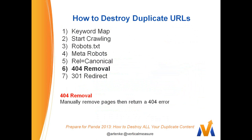Another perfectly legitimate way to get rid of duplicate content is through 404 removal. When you're taking down a page, just take it down and it's going to return a 404. You want to make sure it's returning a true 404, not a soft 404 — I've seen clients set up a page they thought was the 404, but it was actually creating multiple replicate URLs. Over time, Google will remove it from their index. I wouldn't do this on a massive scale, but it's legitimate for a particular category you no longer sell.